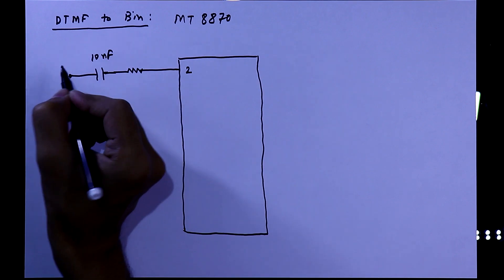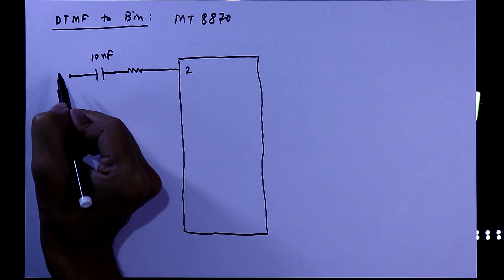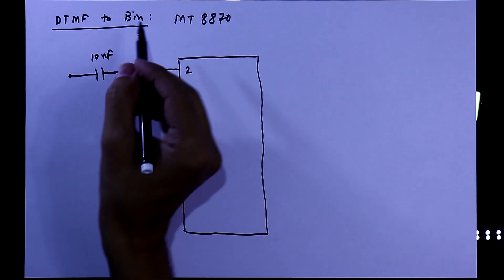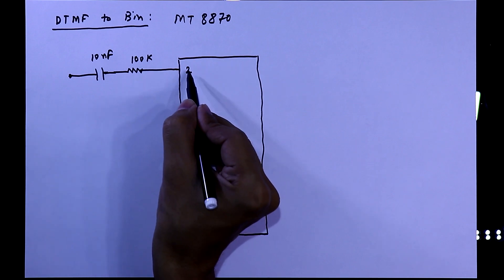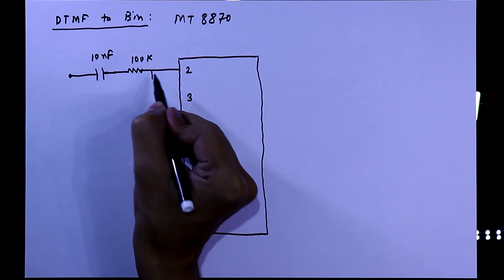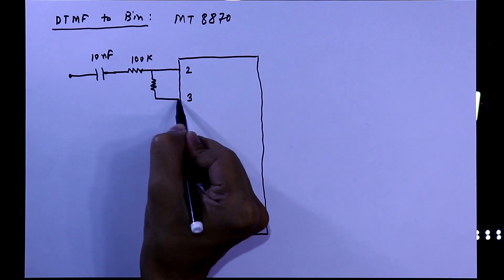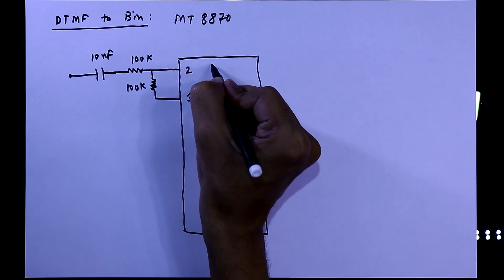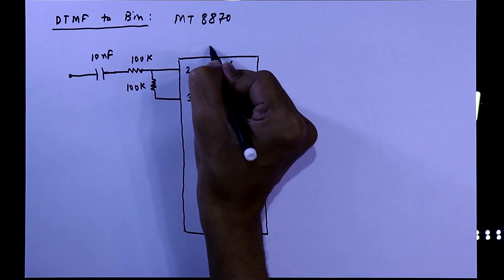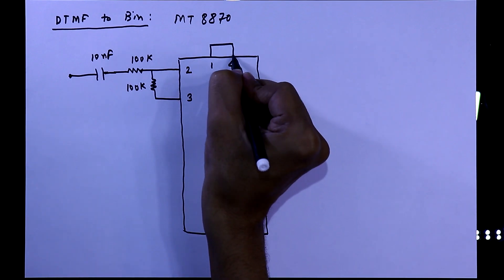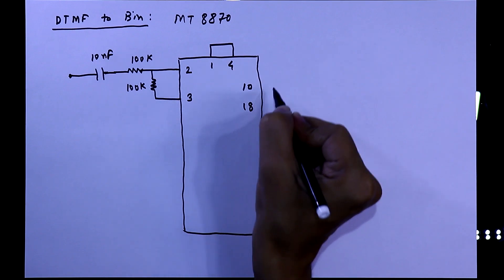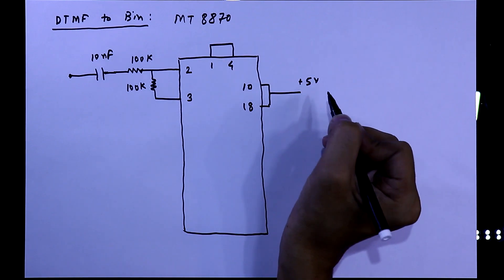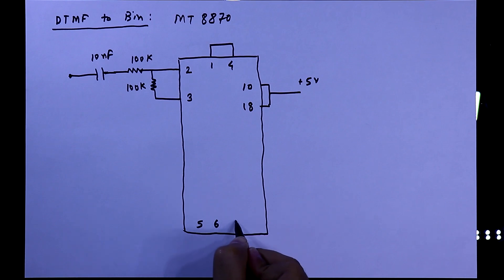Here we will provide the DTMF tone — I will show you how to do this. On pin number 3, and in between pin 2 and 3, we have to connect another 100kΩ resistor. Pin number 1 and 4 are both connected together, and pin number 10 and 18 will be connected to plus 5 volts.